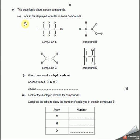This question is about carbon compounds. Look at the displayed formula of the compounds. You can see the displayed formulas. Which one is a hydrocarbon? We know a hydrocarbon is one that contains carbon and hydrogen. Let's have a look. Carbon and hydrogen? Nope, contains bromine. Carbon and hydrogen? Nope, contains oxygen. Carbon and hydrogen? Yes, carbon and hydrogen, nothing else. And this one obviously contains chlorine. So which one is a hydrocarbon? Compound C.